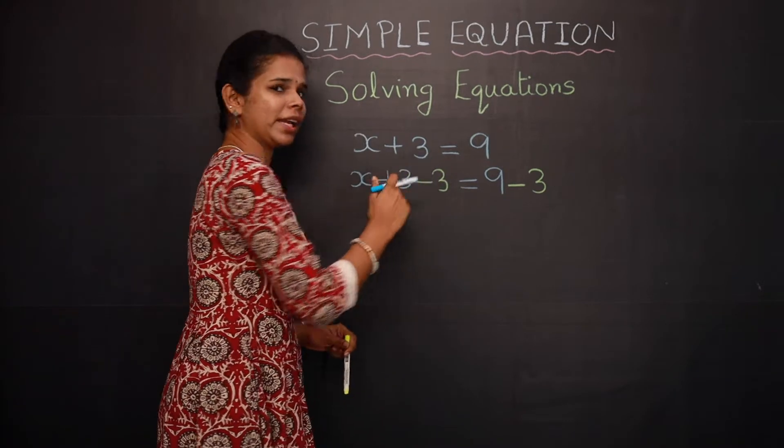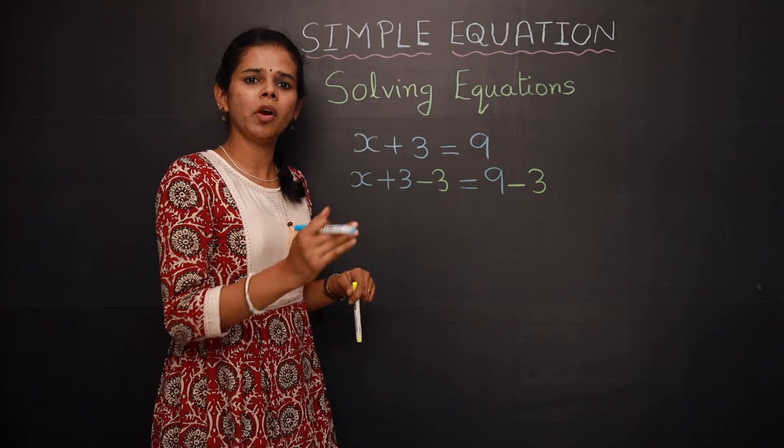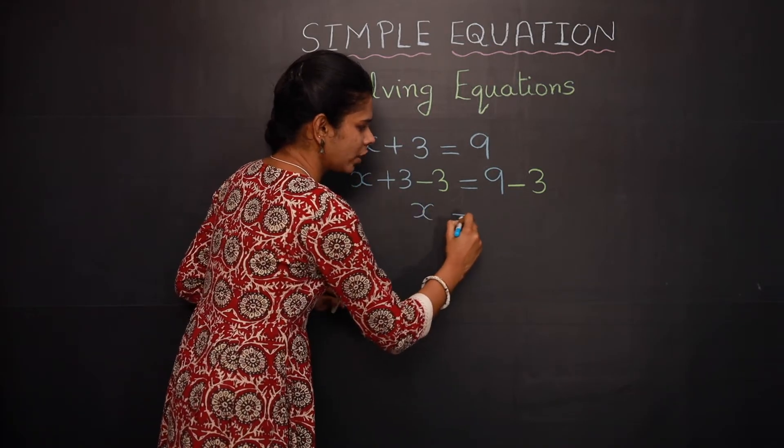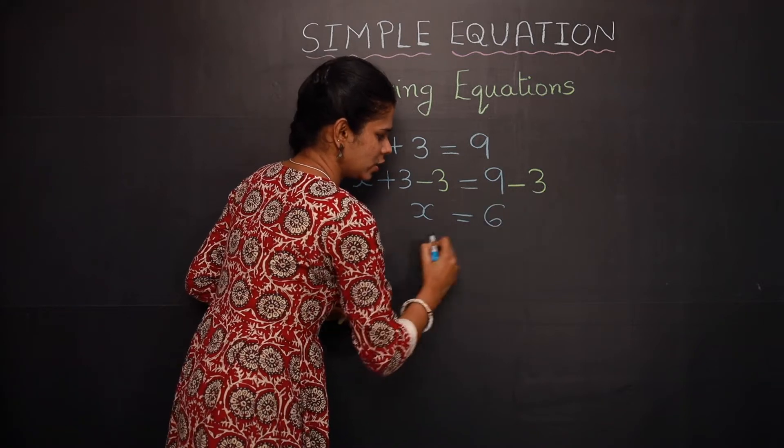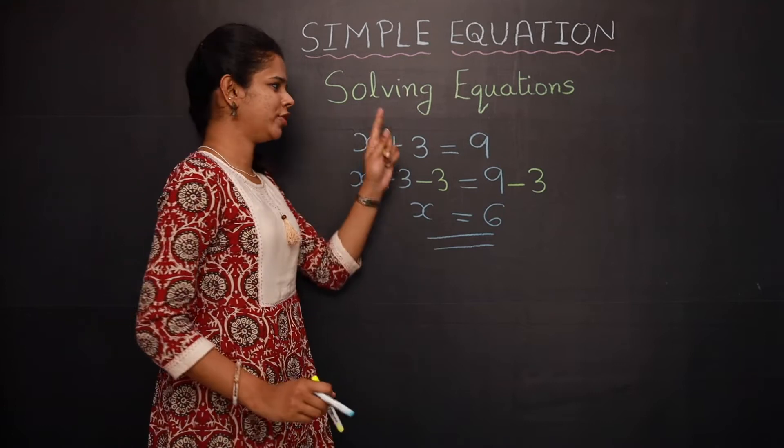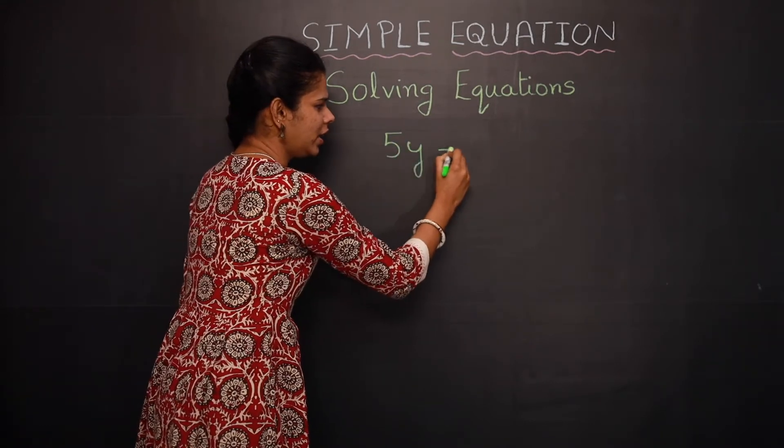So here plus 3 and minus 3 become 0, so this number gets removed and x got separated. That is the variable got separated. So here x is equal to 9 minus 3 is 6. So x equal to 6 is the solution of this equation.